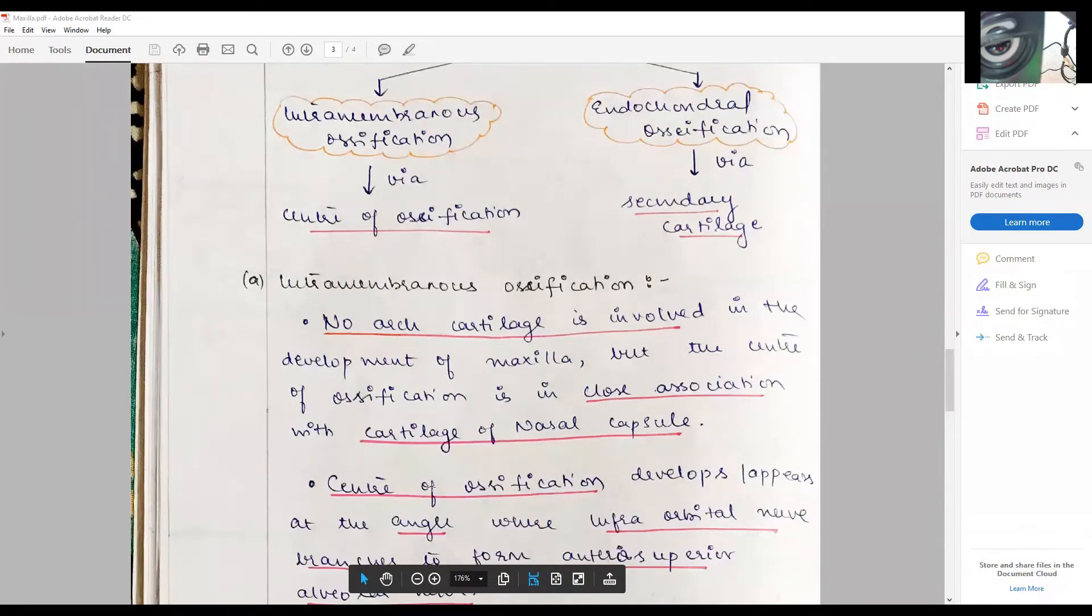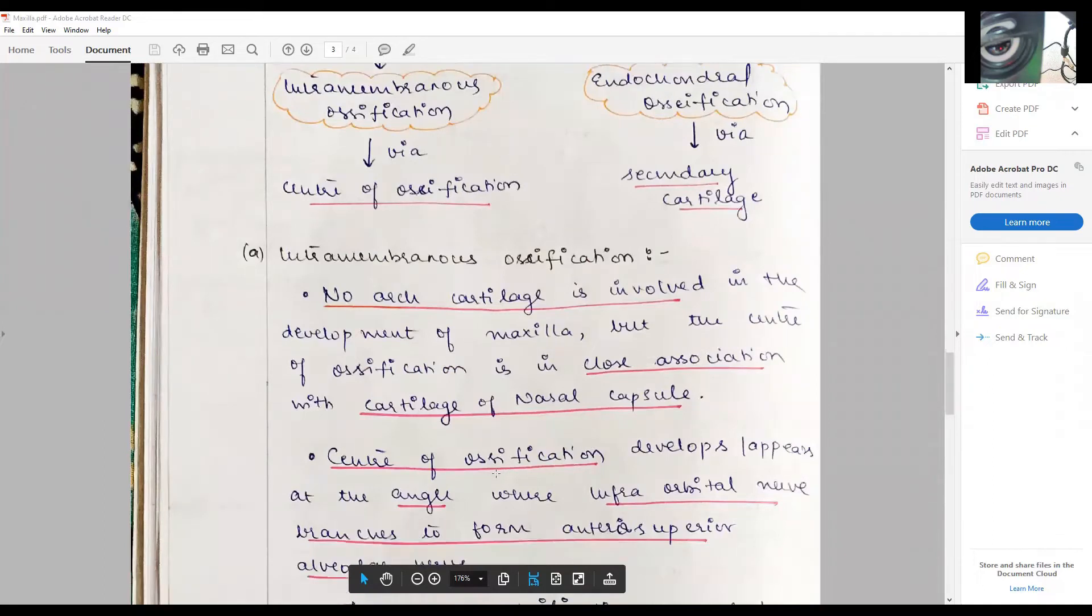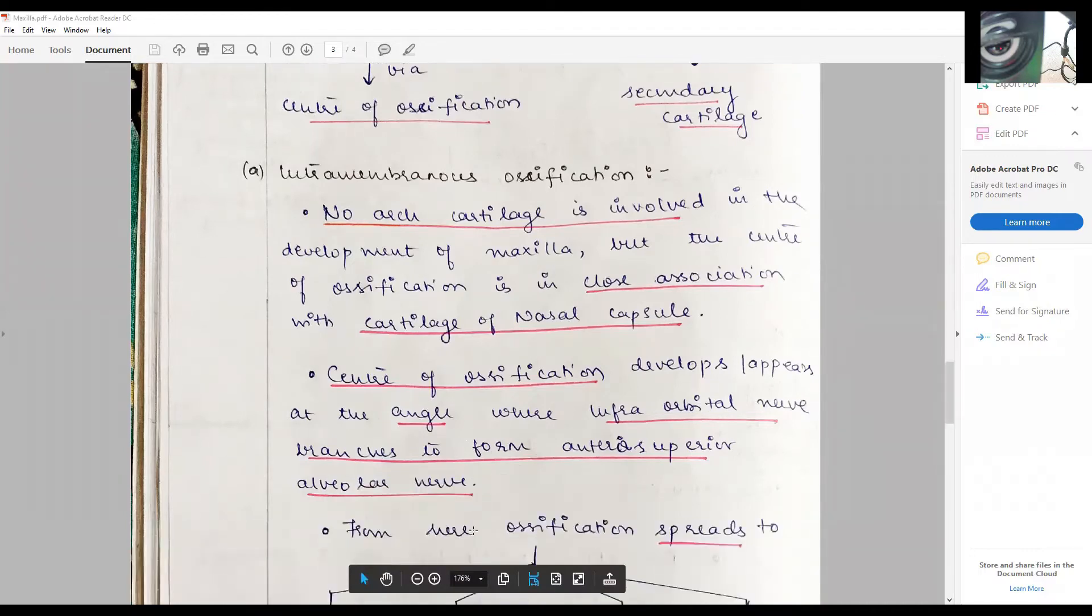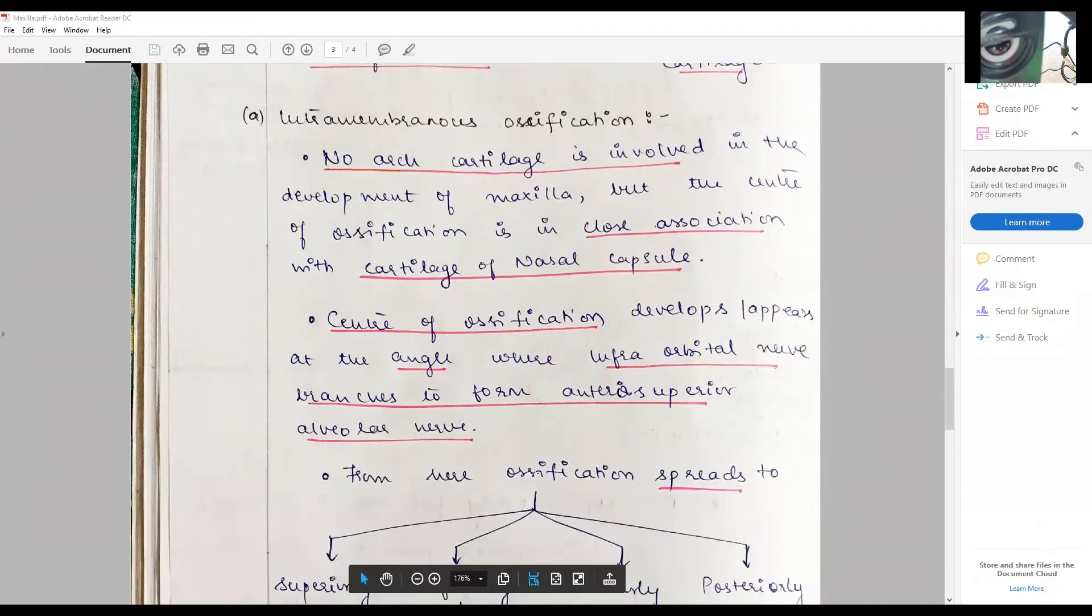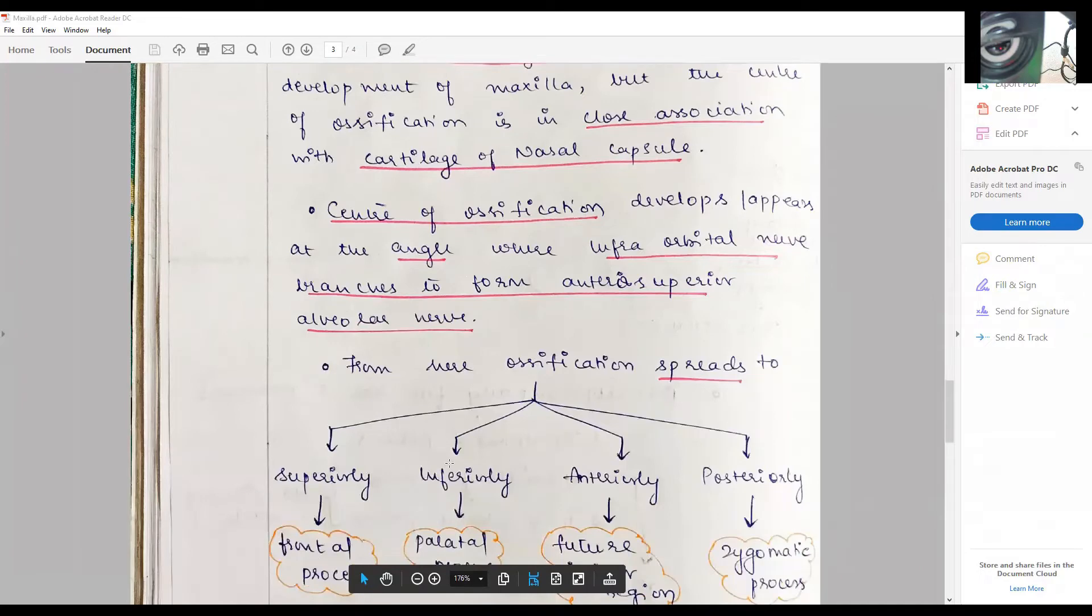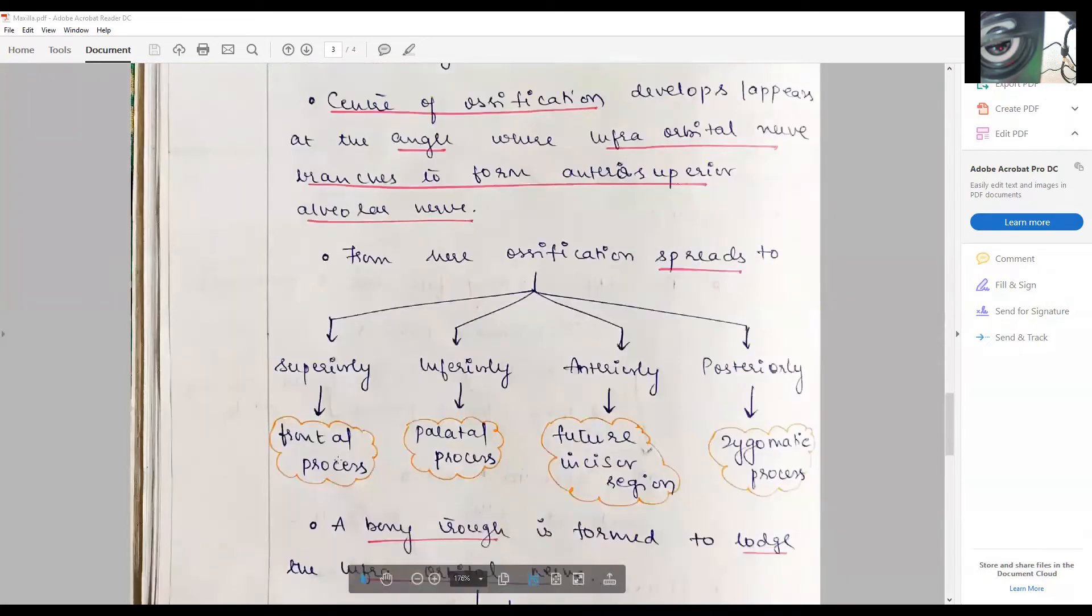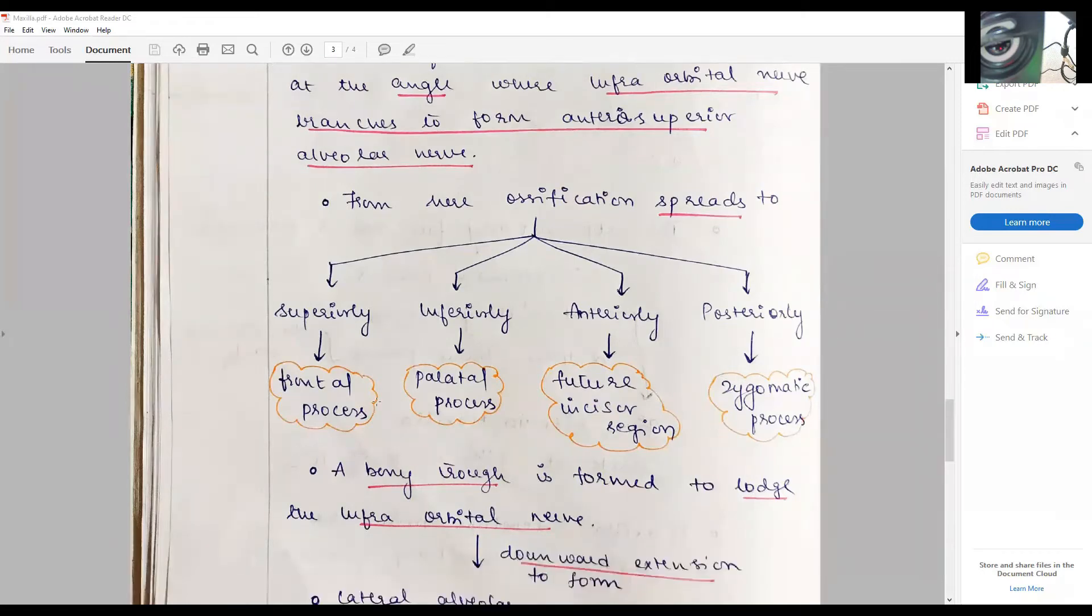The center of ossification appears to originate from an angle where the infraorbital nerve branches off from the anterior superior alveolar nerve. From this, the ossification spreads in four directions: superiorly towards the frontal process, inferiorly towards the palatal process, anteriorly towards the future incisor region (the concept of premaxilla), and posteriorly towards the zygomatic process.